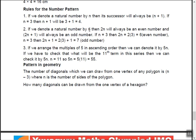If we denote a natural number by n, then 2n will always be even — for example, 2 into 3 is 6. Any number multiplied by 2 is always even; even 2 into 11 gives 22, which is even. And 2n plus 1 will always be odd — for example, 2 into 3 is 6, plus 1 is 7, which is odd. So: 2n equals even, 2n plus 1 equals odd.